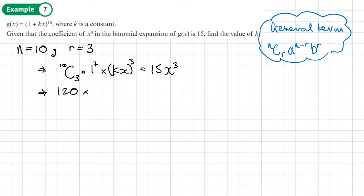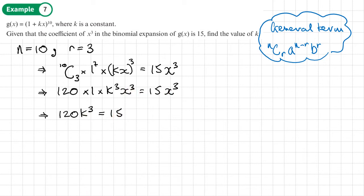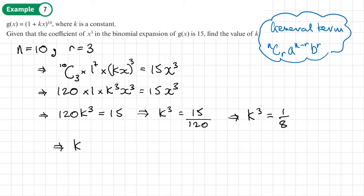Now 10C3 is 120, and (kx) cubed becomes k cubed x cubed, so 120 k cubed x cubed equals 15 x cubed. We can simplify to 120 k cubed equals 15, giving k cubed equals 15 over 120, which simplifies to k cubed equals one eighth. Cube rooting both sides gives k equals the cube root of one eighth, which is one half.